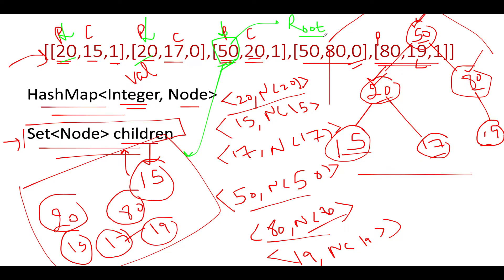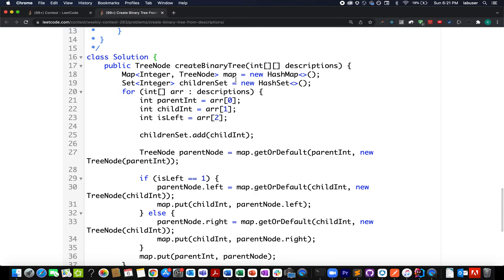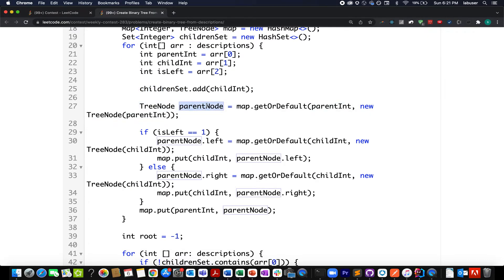To conclude it further, let's quickly have a look at the coding section and I'll exactly follow the same steps as I have talked about. I have created the map, I have created the child set. I start the iteration and I extract the parent integer value, child integer value, and I check if it is the left child or not. I add my current child integer value to the child set, and I extract the parent node from the map. If it is not there then I create it. If it is my left child, I attach parent's node left to the node that is already present at child int value in my map. If it is not there, I simply create a new node and I add it to my map.